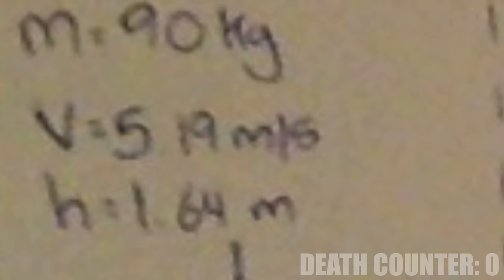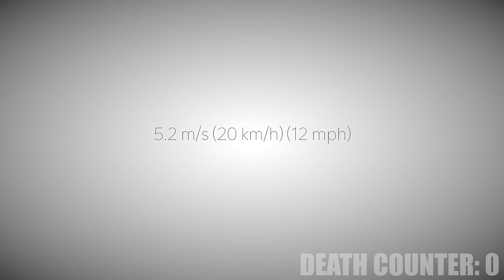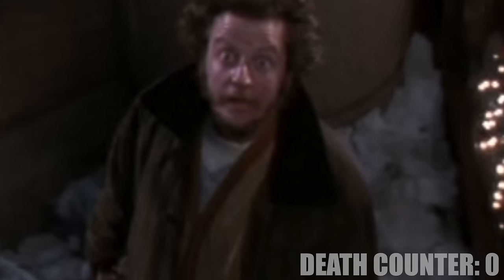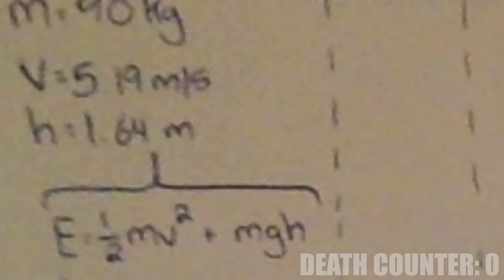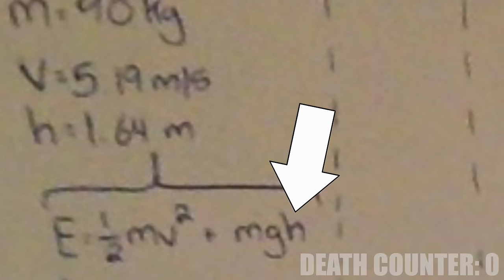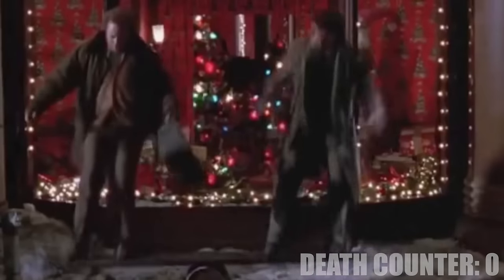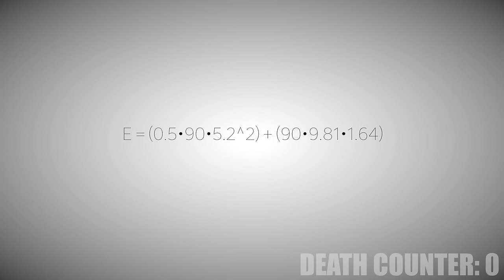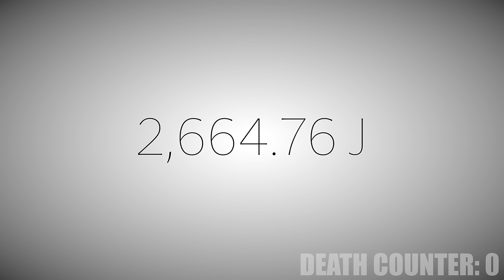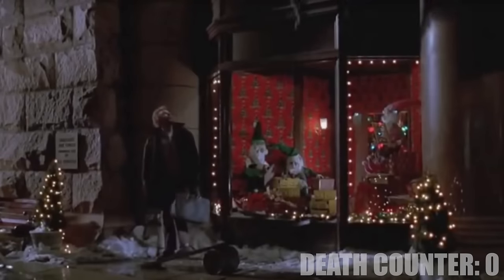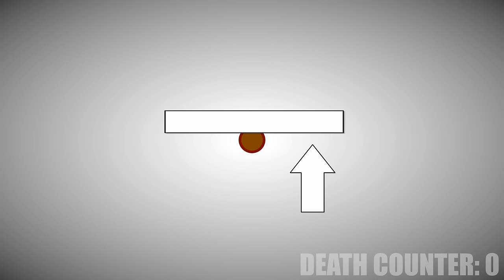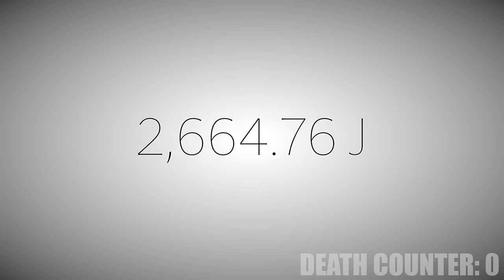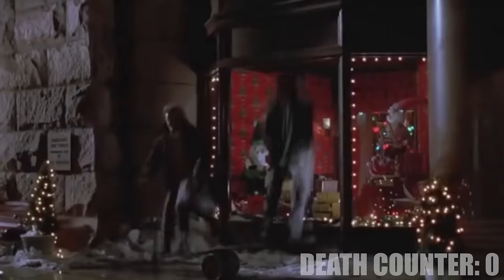Marv runs toward the board at about 5.2 meters per second, which is about 20 kilometers per hour, or 12 miles an hour. If we want to find out how high Harry is sent, we must start by finding the total energy Marv puts onto the board — that's his movement energy and the energy he has from falling down onto it. Marv falls down onto the board from about 1.64 meters. The formulas are displayed here. Filling in all we need, we discover that Marvin uses an energy of 2,664.76 joules to send Harry flying up into the sky.